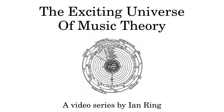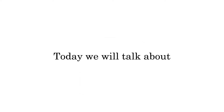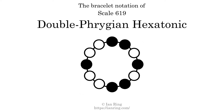Welcome to the exciting universe of music theory. Are you ready to learn? Then let's begin. Today we will talk about scale 619, Double Phrygian Hexatonic, which sounds like this.